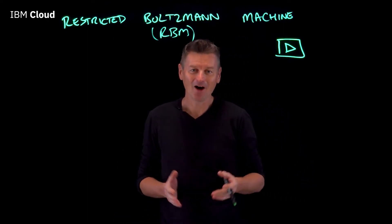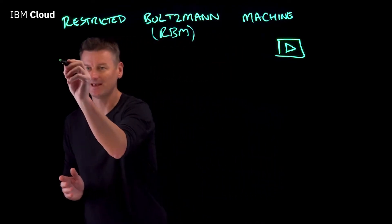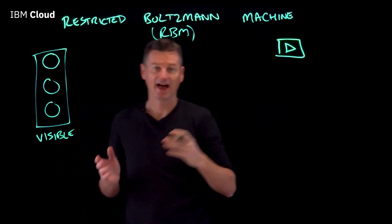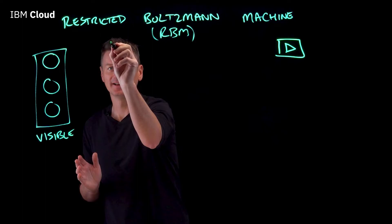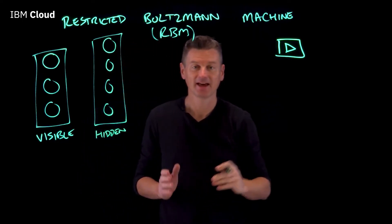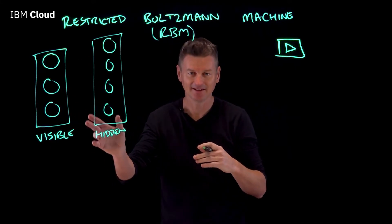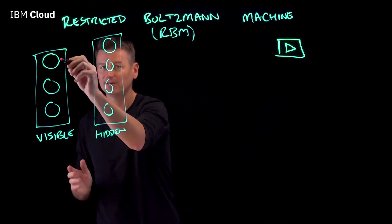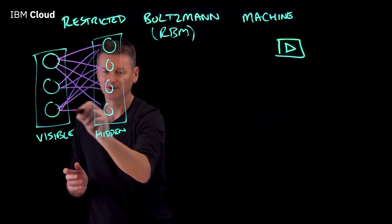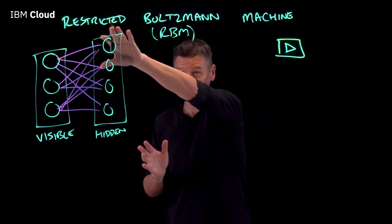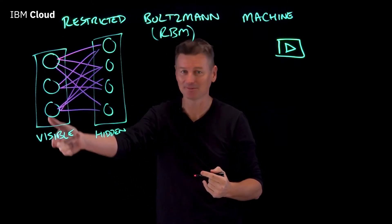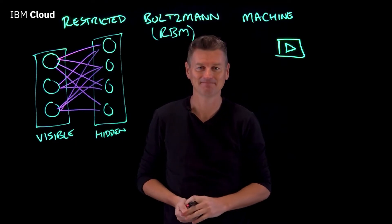RBMs are made up of two parts: there's the visible layer that contains some nodes, and then there is the hidden layer. Every node in the visible layer is connected to every node in the hidden layer — it's a one-to-many relationship. The 'restricted' part comes about because no node is connected to any other node in the same layer, so the visible nodes are not connected to each other, and nor are the hidden nodes.